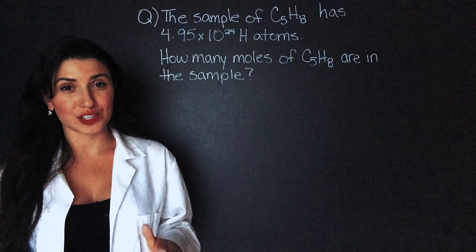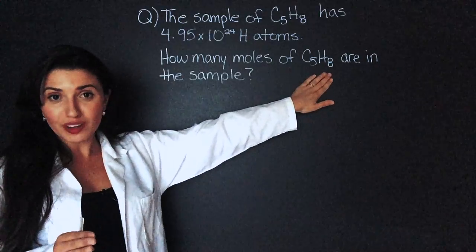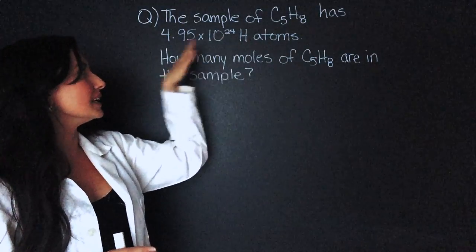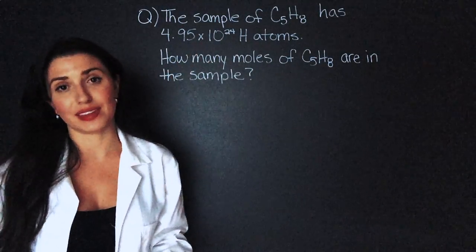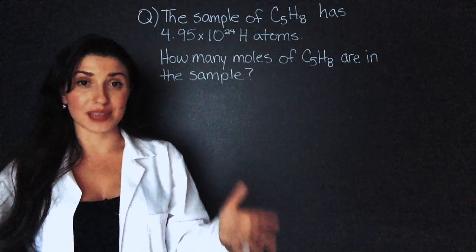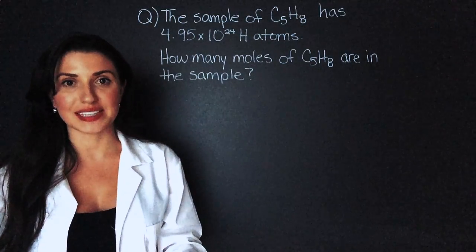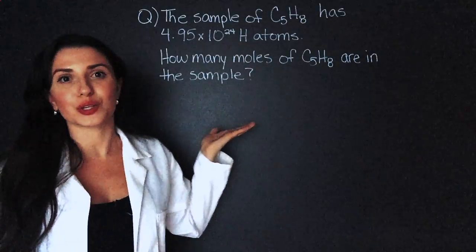Now this is a tricky question because we're looking for moles of a molecule and we're only given the number of atoms. We're not given the number of molecules. So that original equation of moles equals number of molecules divided by Avogadro's number can't be used yet. We first have to find the number of molecules.